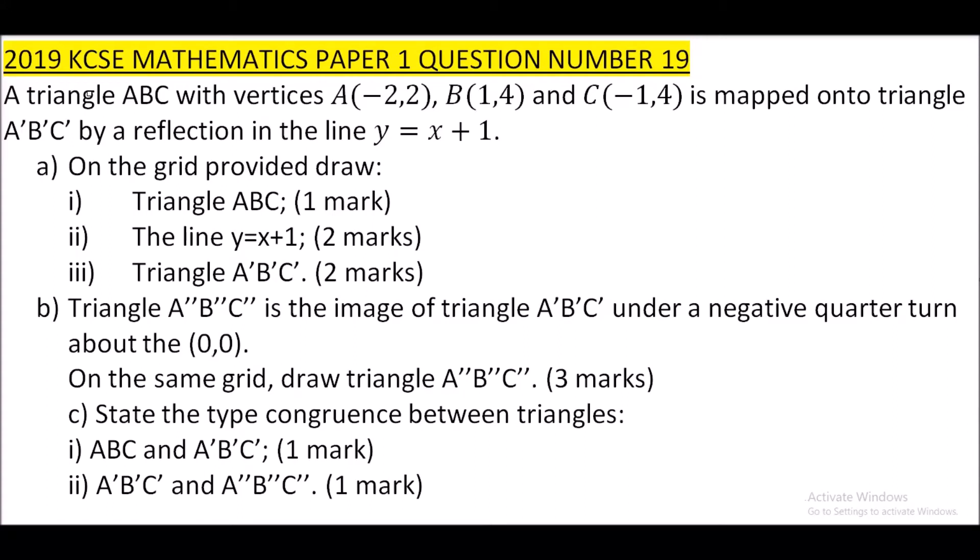Question 19, 2019. Triangle ABC with vertices A(-2, 2), B(1, 4), and C(-1, 4) is mapped onto triangle ABC prime by a reflection in the line y = x + 1. On the grid provided, draw triangle ABC and the line y = x + 1. Triangle ABC double prime is the image of triangle ABC prime under a negative quarter turn about the origin (0, 0). On the same grid, draw triangle ABC double prime. State the type of congruence between triangles ABC and ABC prime, and between ABC prime and ABC double prime.